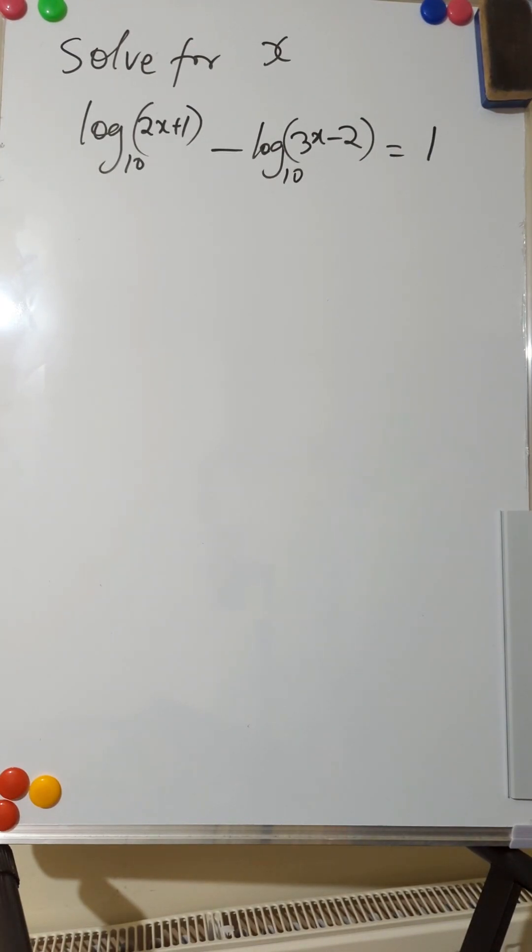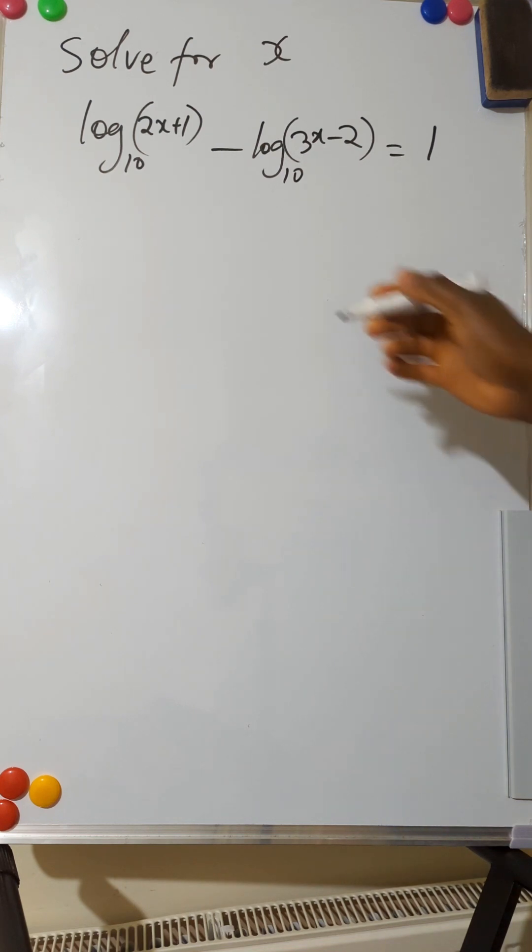Hello, welcome once again. The question says solve for x if log base 10 of (2x+1) minus log base 10 of (3x-2) equals 1. This is a very simple logarithm, so when you see something like this...